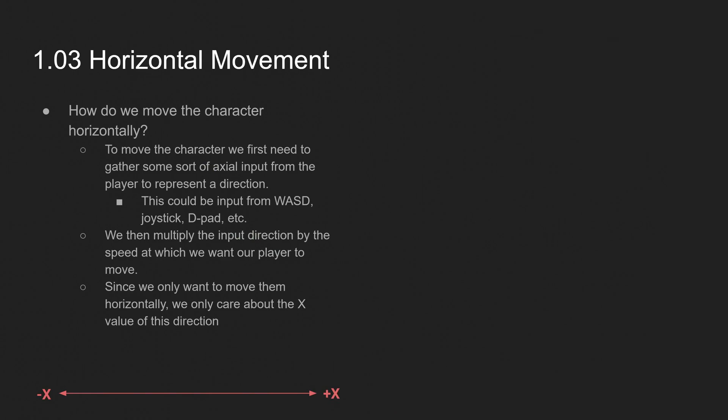Horizontal movement. How do we move the character horizontally? So to move the character, first we need to gather some sort of axial input from the player to represent a direction. And it could be WASD on the keyboard, a joystick, a D-pad, whatever. It really doesn't matter as long as you can find some way to gather axial input. We're then going to multiply that input direction by the speed at which we want our player to move. And since we only want to move them horizontally, we only care about the x value of this direction.